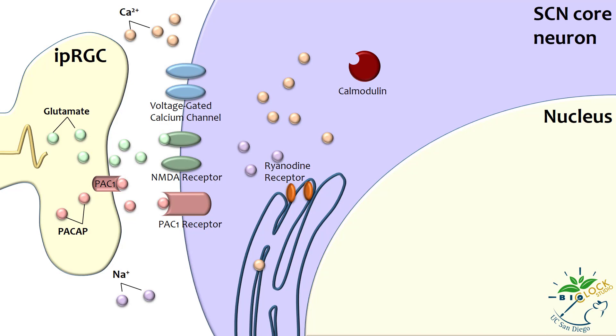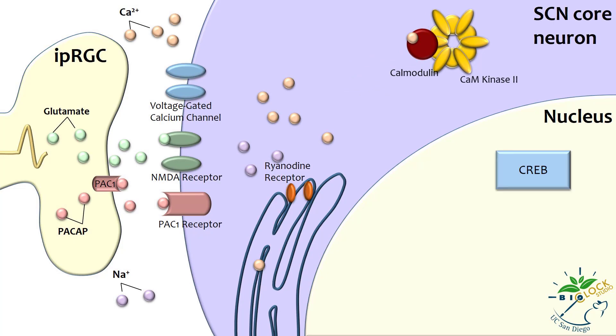Calcium in the cytoplasm binds to a protein called calmodulin to form a calcium-calmodulin complex. This complex in turn activates calcium-calmodulin kinase 2, or CAMK2, which is now able to phosphorylate cyclic AMP response element binding protein, also referred to as CREB.